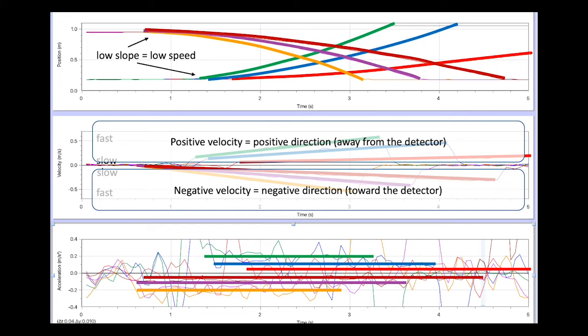One of the things we also see in these trials is that every time our acceleration is positive, our velocity is also positive and the motion is also away from the detector. However, this is not always the case. It is in fact possible to have motion in one direction and your velocity in one direction, but have your acceleration pushing in the other. So let's take a look at those examples next.